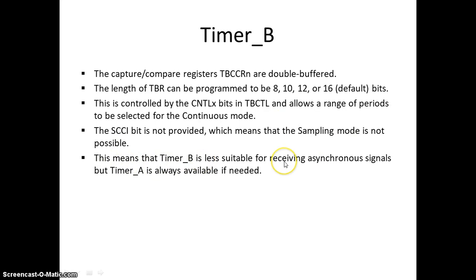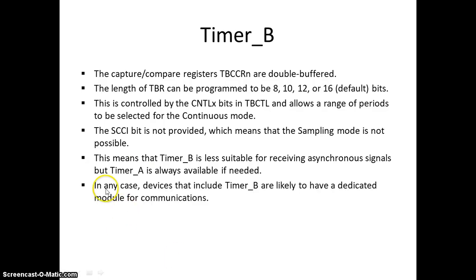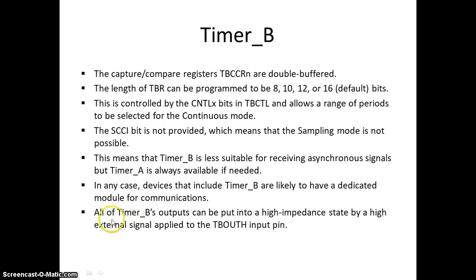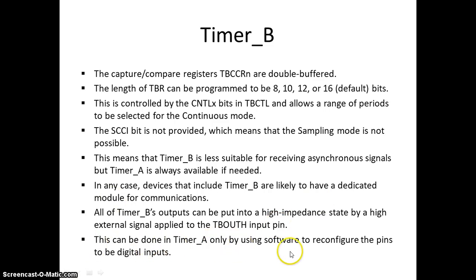Timer B is less suitable for receiving an asynchronous signal, whereas Timer A is always available for that. If a microcontroller has Timer B but not Timer A, it will have separate dedicated hardware for asynchronous communication. Any device that includes Timer B is likely to have a dedicated module for communication. All Timer B outputs can be put into a high-impedance state by a high external signal applied to TB out H pin, whereas in Timer A this can only be done via software reconfiguring pins as digital inputs.